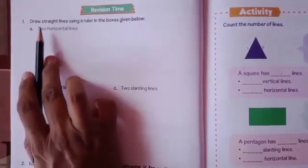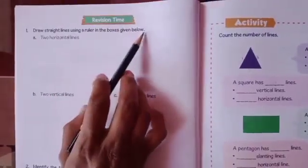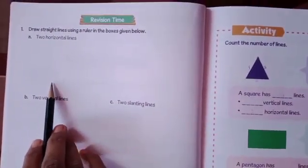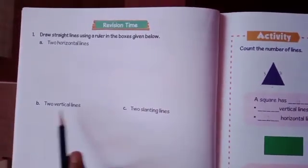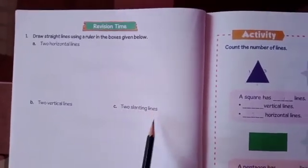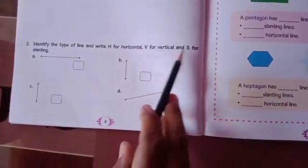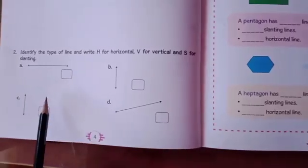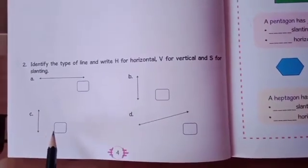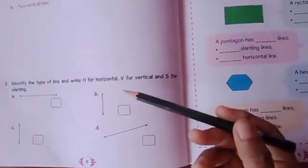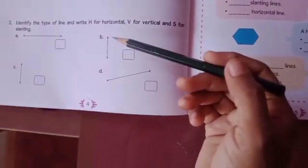Revision time — on page number 4 you can solve at your home in your textbook. Draw a straight line using a ruler in the boxes given below. Draw two horizontal lines, two vertical lines, and two slanting lines. For question number 2, identify the type of line and write H for horizontal, V for vertical, and S for slanting. Now solve this revision at home and also in your notebook.